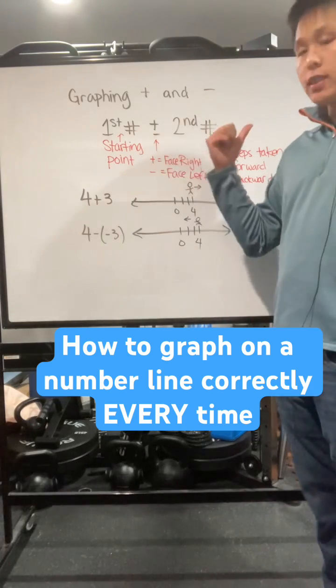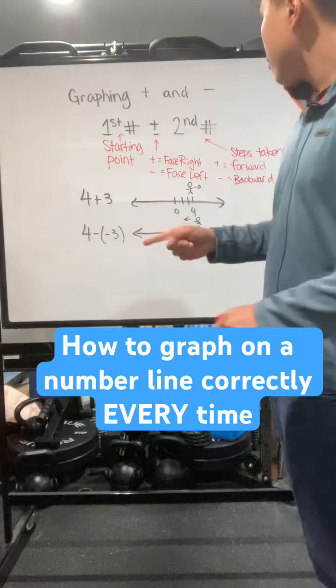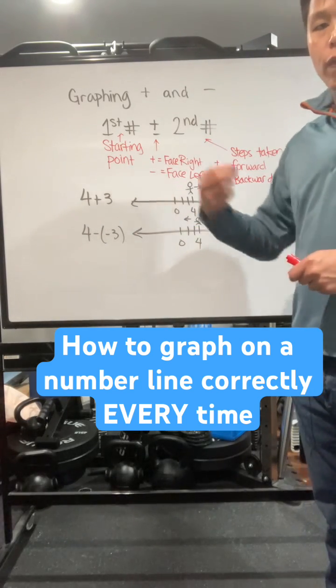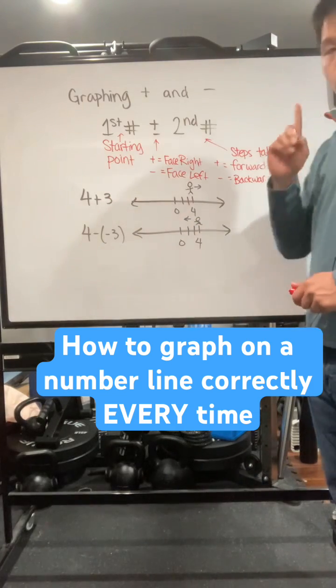If it's plus, you're going to be facing the right. If it's minus, you're facing the left. And the second number is the steps taken. If it's a positive number, you're moving forward. If it's a negative number, you're moving back.